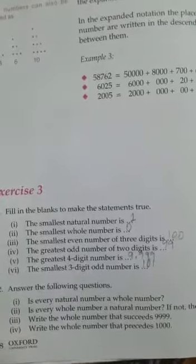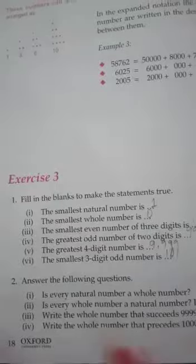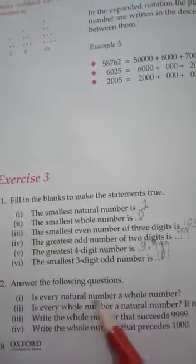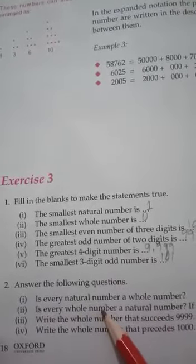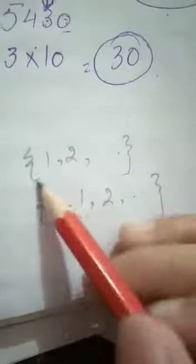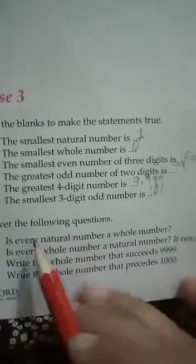Umeed hai aapko yeh blanks samajh mein aa jaayengi. Agar nahi aati toh aap mujhe pooch sakte hain. Next, question number 2: answer the following questions. Is every natural number a whole number? Yes — natural numbers 1, 2, 3... se start hote hain aur whole numbers 0, 1, 2... se. Iska matlab yeh hai ki saare natural numbers whole numbers ke andar aa rahe hain, toh answer hai: yes, every natural number is a whole number.